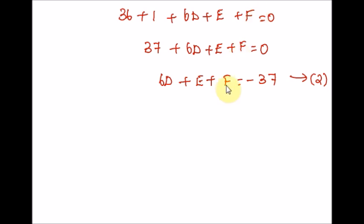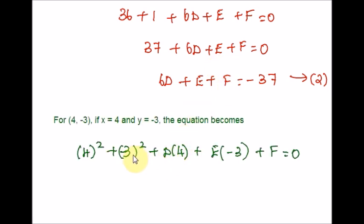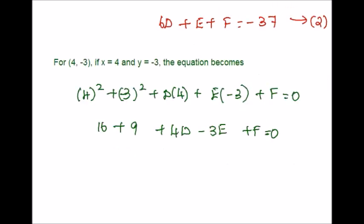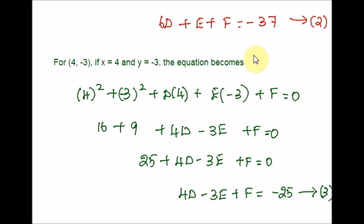Let us do the same process with the third pair: x = 4 and y = −3. Here the e-term will become negative. For solving the system of linear equations, we need to be careful with the rules of signs — multiplication, division, addition, and subtraction — so that our problems will be mistake-free. Combining like terms and subtracting 25 from both sides, we get Equation 3.